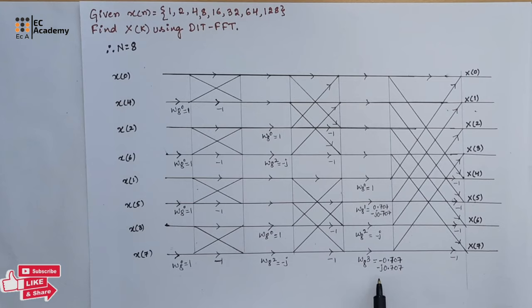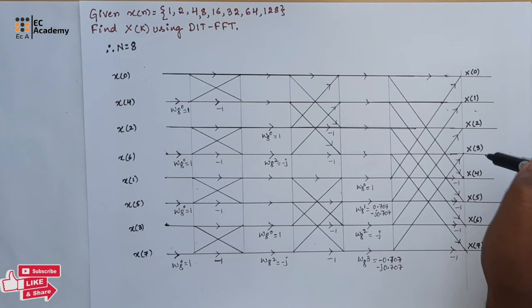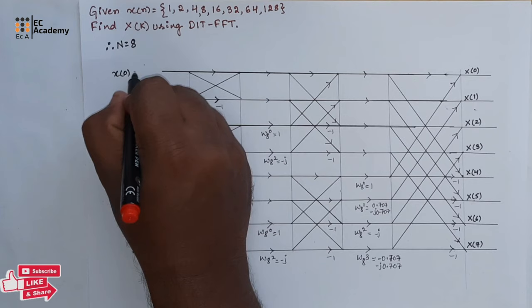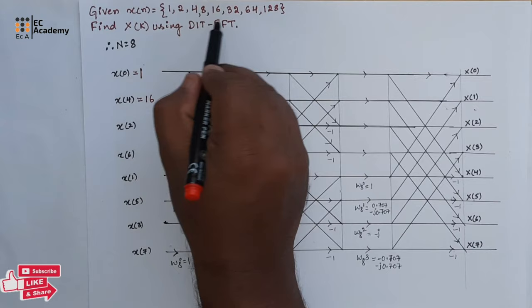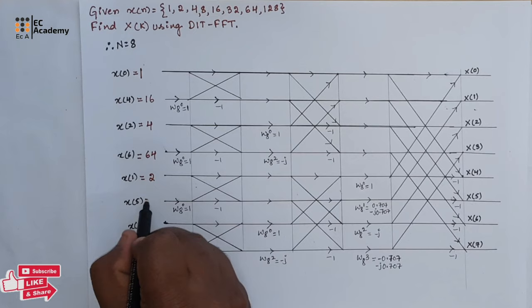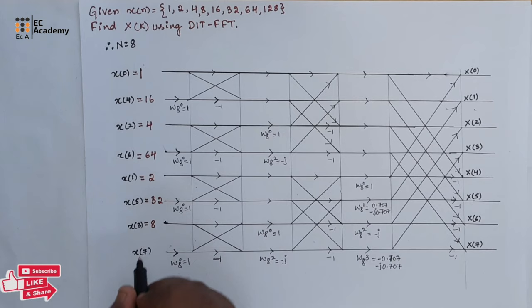At the output we get the frequency domain signal from x of 0 to x of 7. In the first step, let us write the values of all the inputs: x of 0 is 1, x of 4 is 16, x of 2 is 4, x of 6 is 64, x of 1 is 2, x of 5 is 32, x of 3 is 8, and x of 7 is 128.